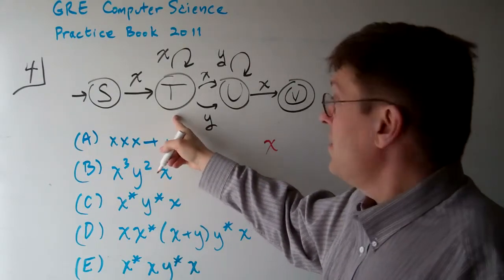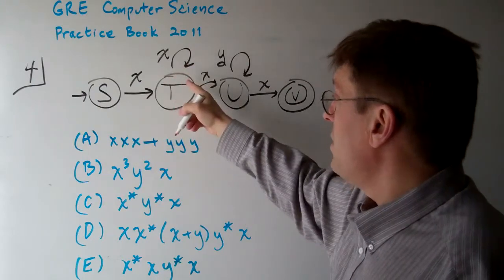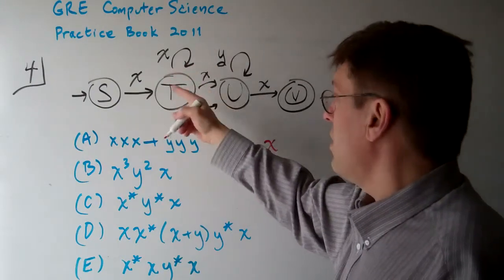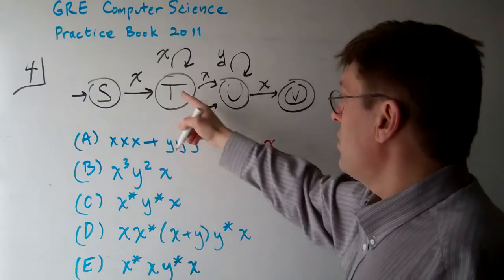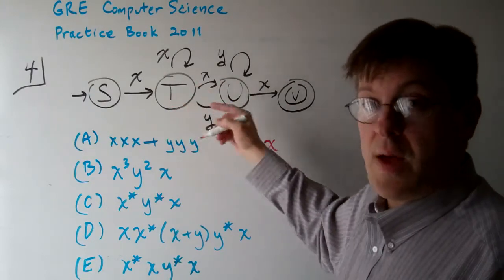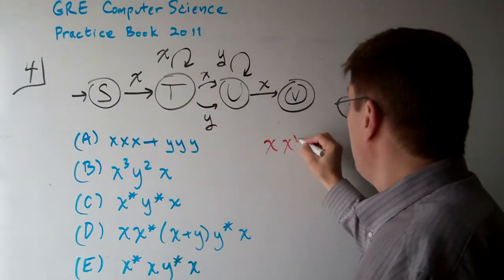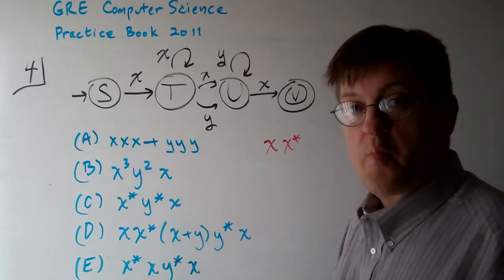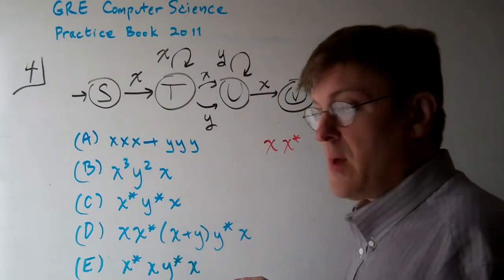Now with this T operation, you can either have another X as many times as you want, or you can proceed through this way. Well, X as many times as you want is X star. Zero or as many times as you want.